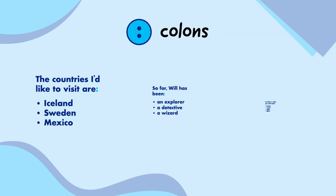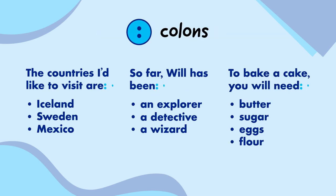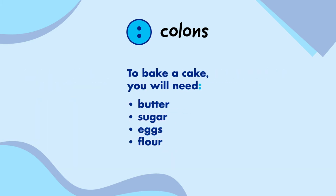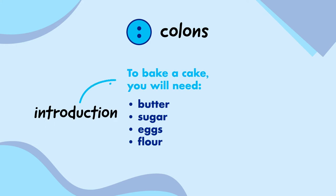Colons are used to start lists. They separate the introduction of a list from the list itself. For example, to bake a cake you will need: butter, sugar, eggs, and flour. The colon separates the introduction of the ingredients from the list of ingredients.